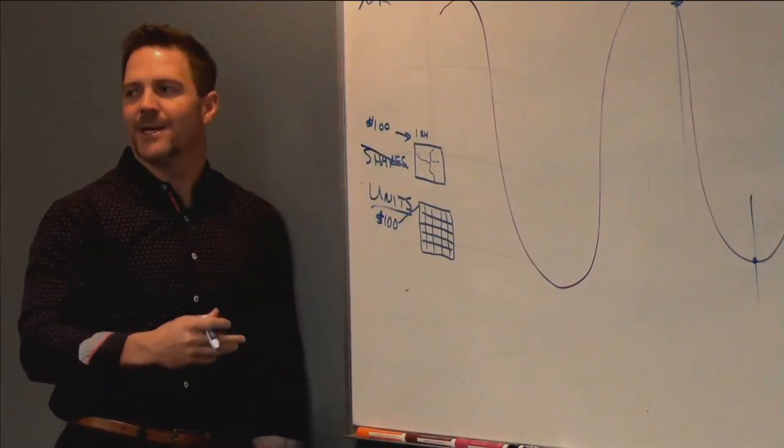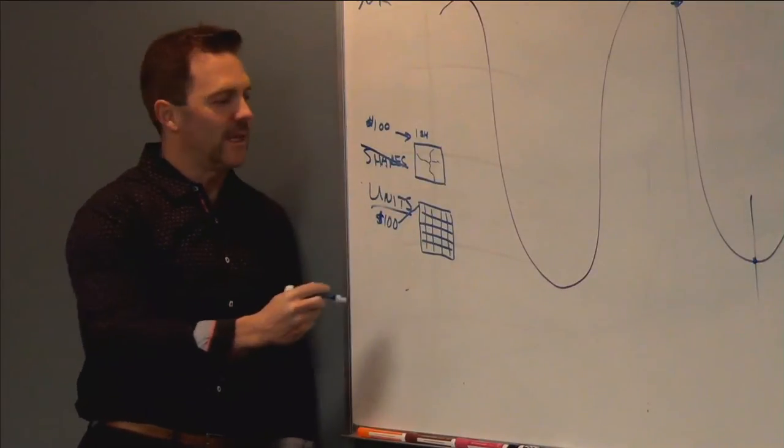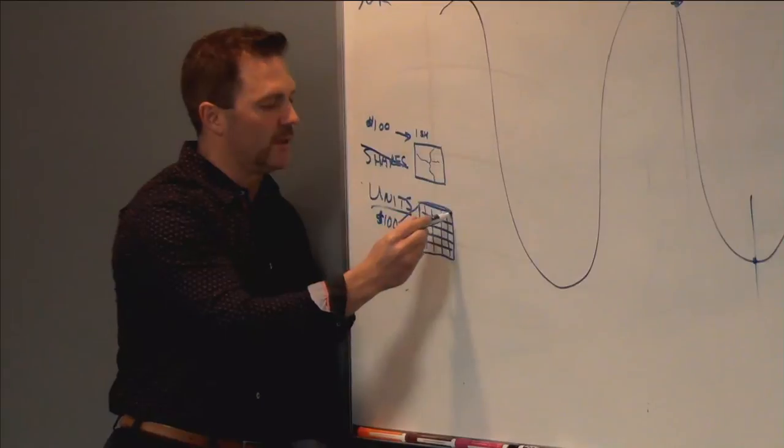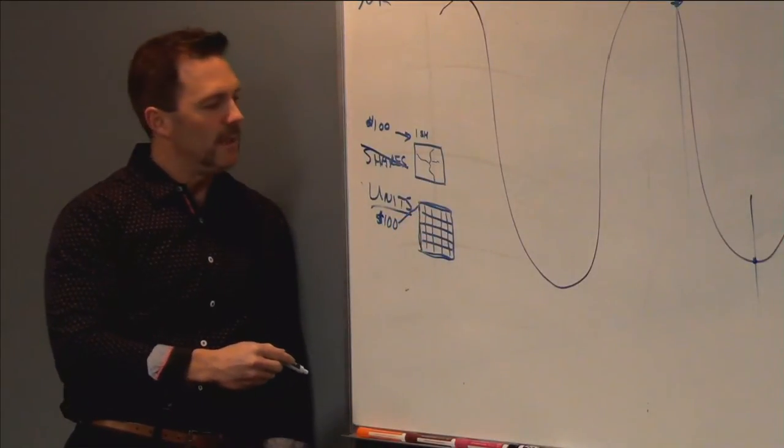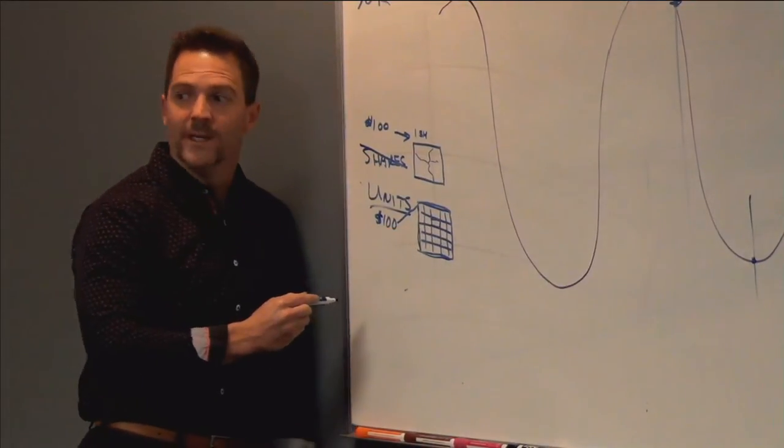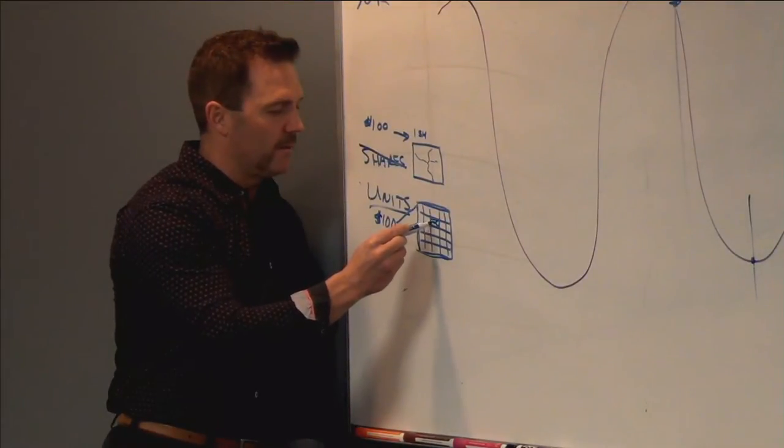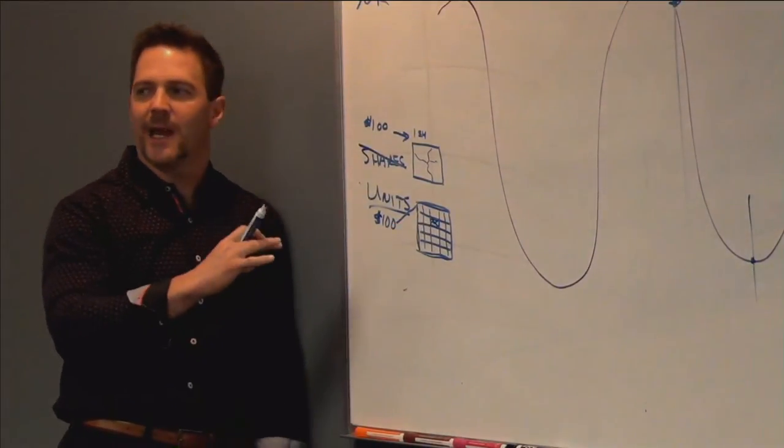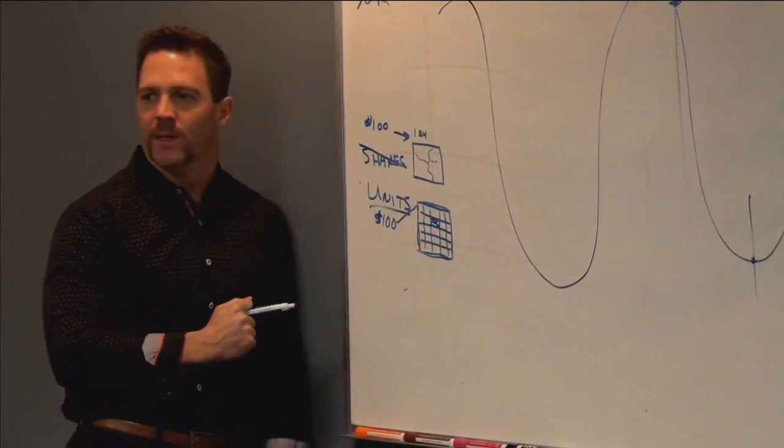And so it doesn't even necessarily have to be a complete share. It's a collection of company stocks, many companies. Now in this case, if you happen to have an Enron window in there and that window goes out, it doesn't take out your entire window. It only takes out one pane of the window.